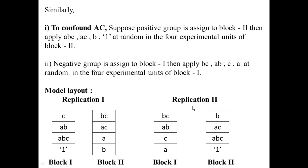In replication 2, we confound AC. The negative group is assigned to block 1 giving BC, AB, C, and A, and the positive group is assigned to block 2 giving B, AC, ABC, and 1. This is the model layout when we partially confound interaction effects AB and AC.